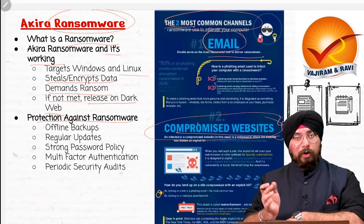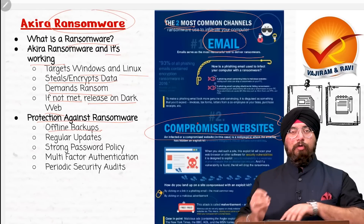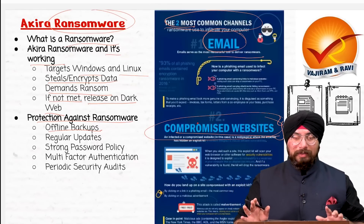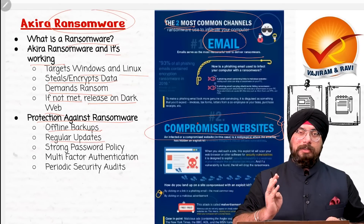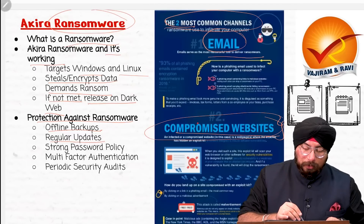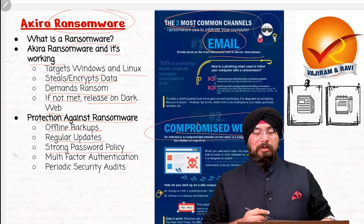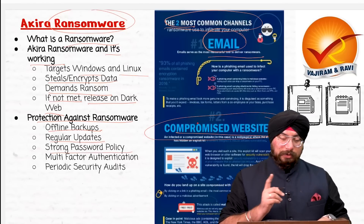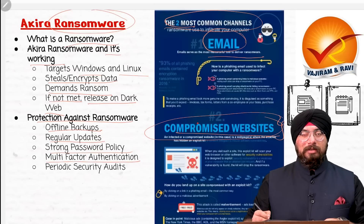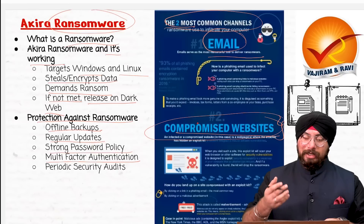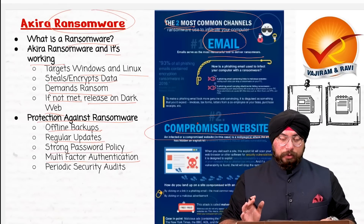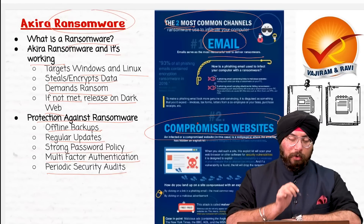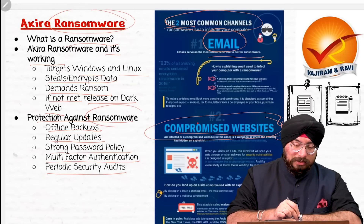How can we protect ourselves against ransomware? First, we need to have offline backups — not online — of our sensitive data, because backup of sensitive data should always be kept. Then regular updates: we need to regularly update our operating system with the latest firewalls. Also, a strong password policy for organizations — organizational passwords need to be very, very strong because sensitive data is mostly pertaining to organizations. Then multi-factor authentication — three-factor authentication should be in place to access any sensitive data. Then periodic security audits of the computer systems of an organization need to be there to protect devices against ransomware.